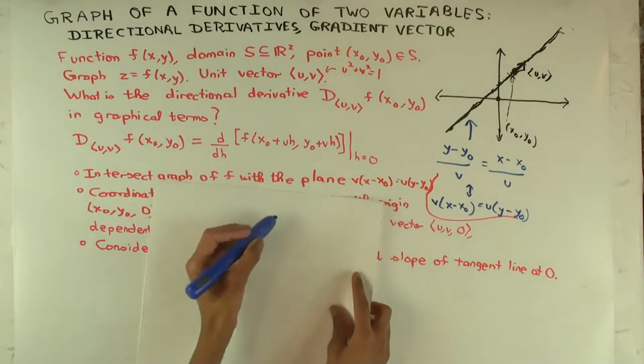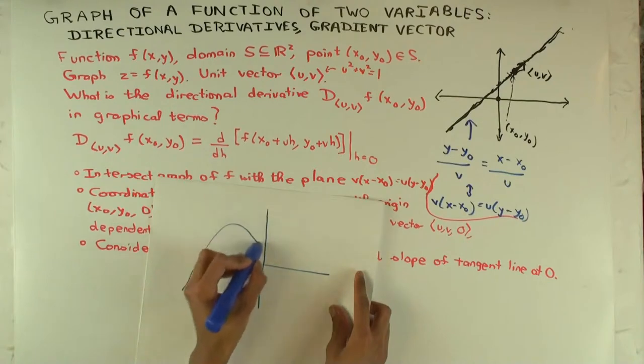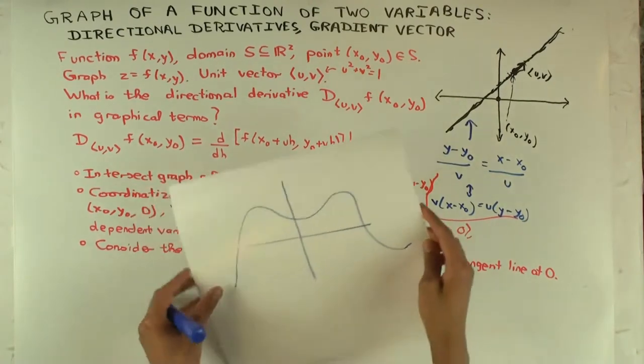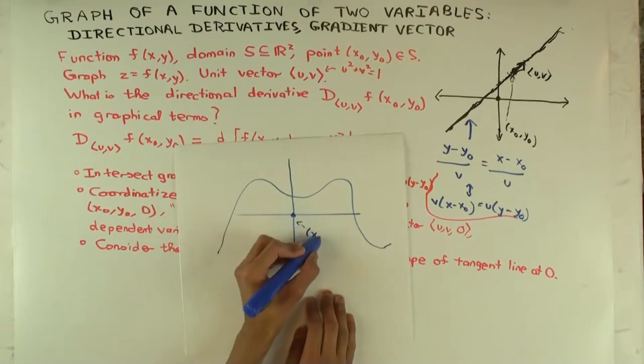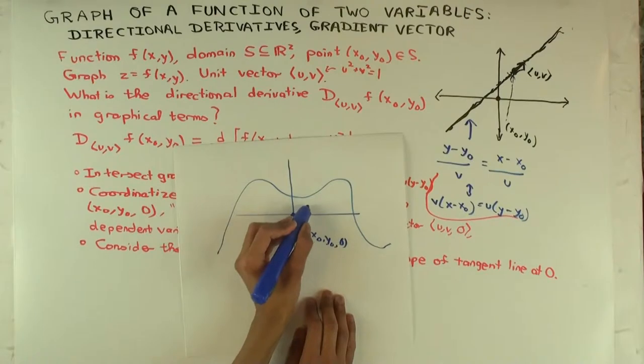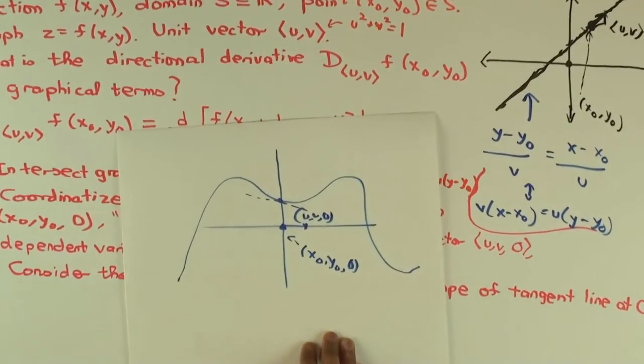It will be some picture like that, and we chose it so that this point (x₀,y₀,0) is the origin here and the unit vector here in this direction is just (u,v,0). And now we just look at the slope of this tangent line and that gives you the directional derivative.